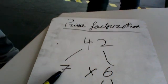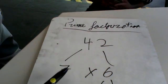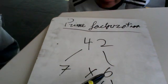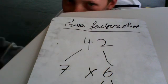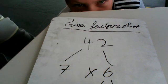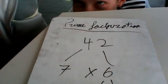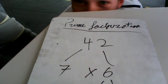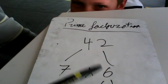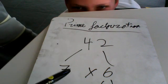7 is already prime and 6 is composite. So then make 3 times 2, which equals 6. 3 and 2 are already prime.